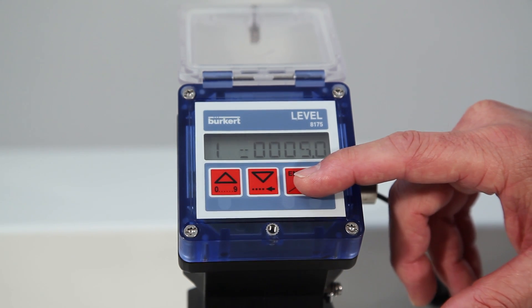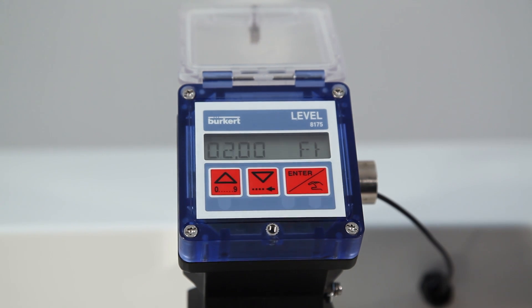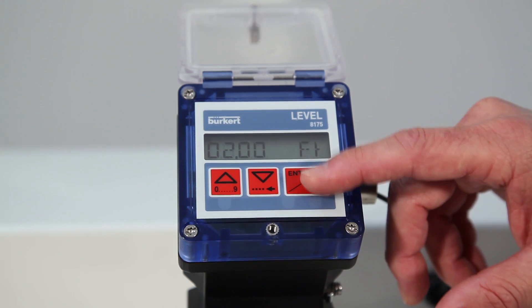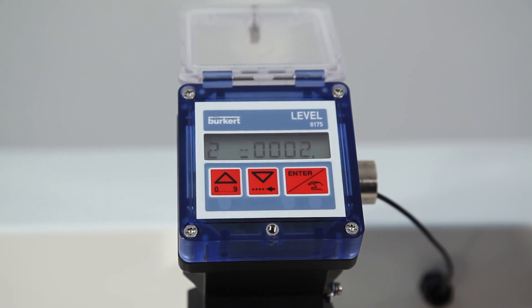Press enter to confirm that value and what now appears is the second distance point. Once you've determined that distance, hit enter to save and once again the associated volume for that second distance point will appear. In this case 2 gallons.